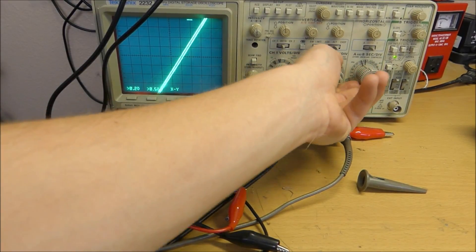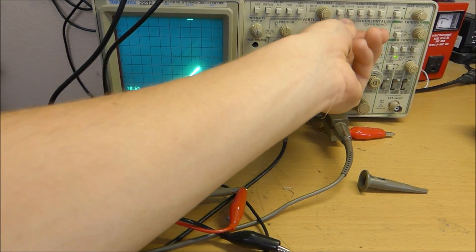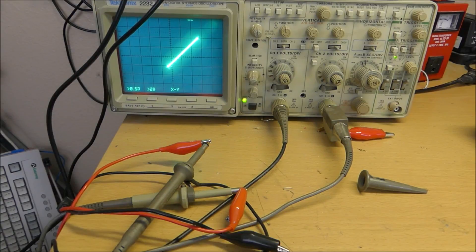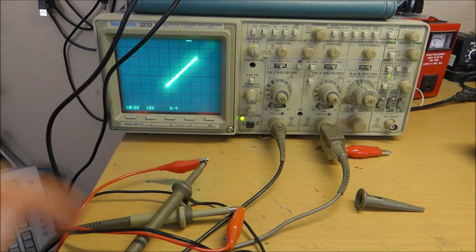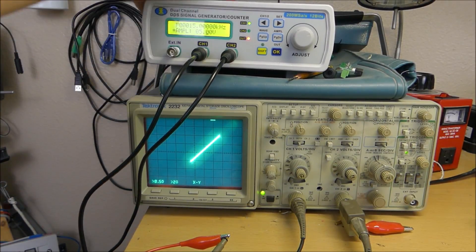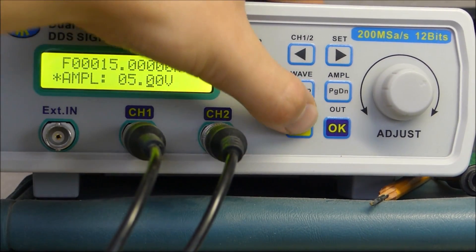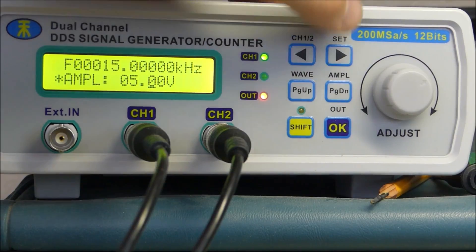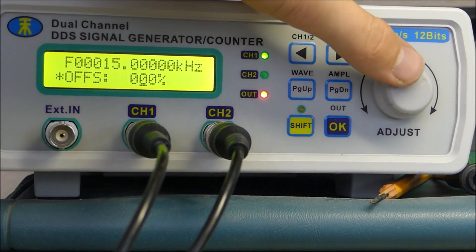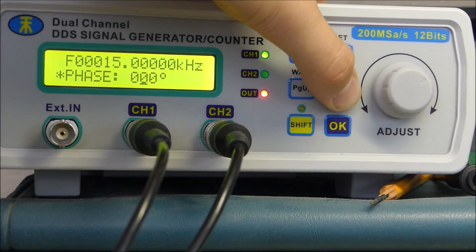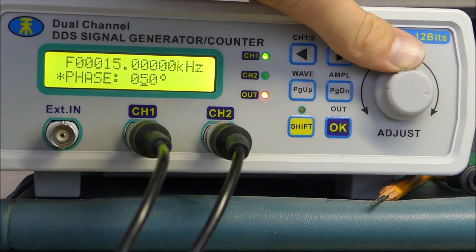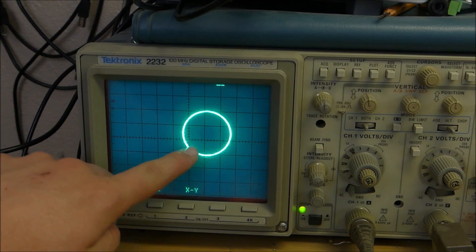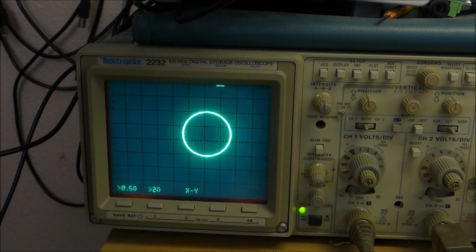Now we can adjust the voltage and scoot it around. As you can see we have a line across the screen. Now I said this would make a circle and I wasn't exactly lying. What we need to do here is change the phase angle of your frequency. Press set, page down until you see the phase. You want to set the phase to approximately 90 degrees.